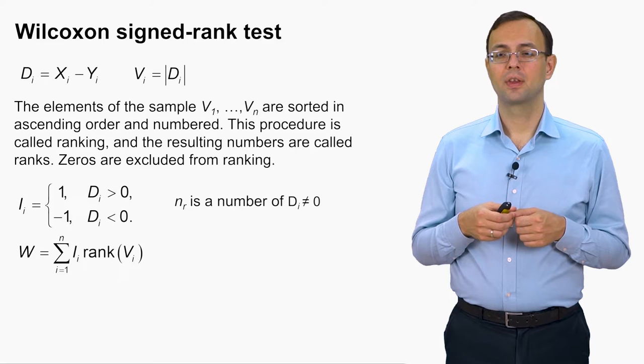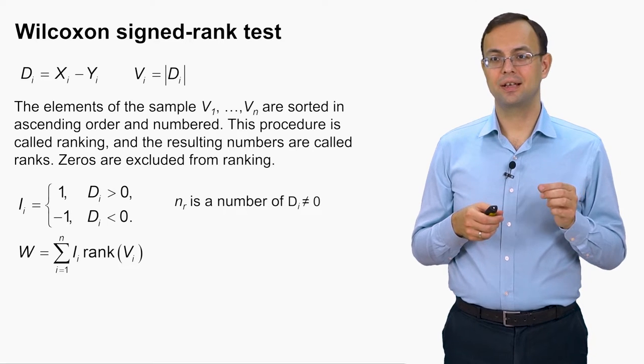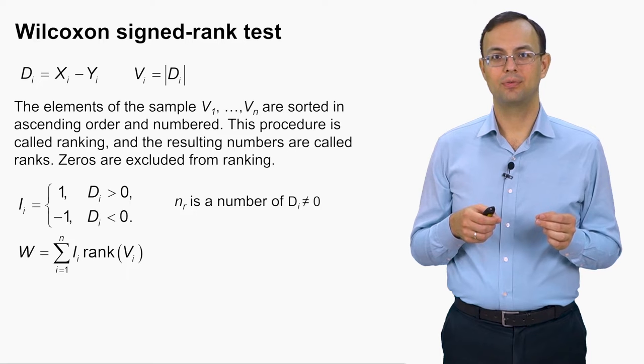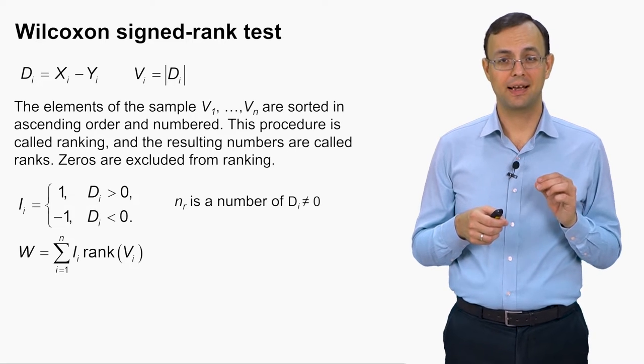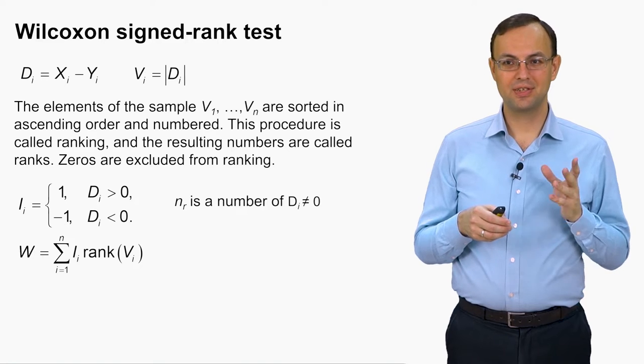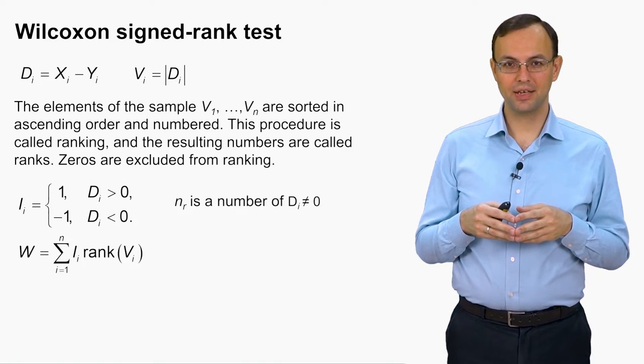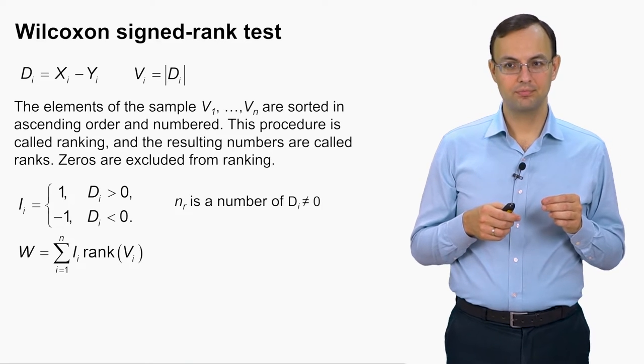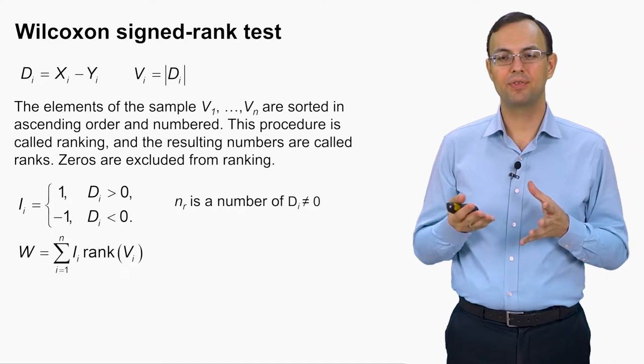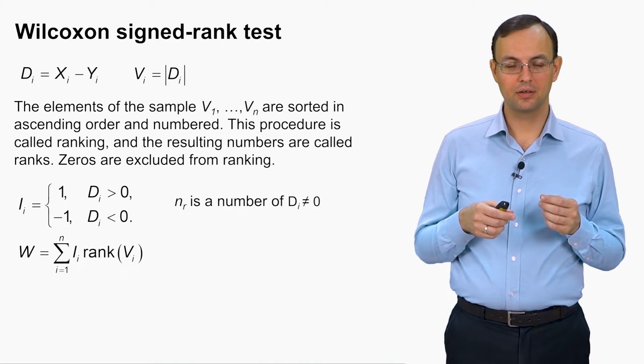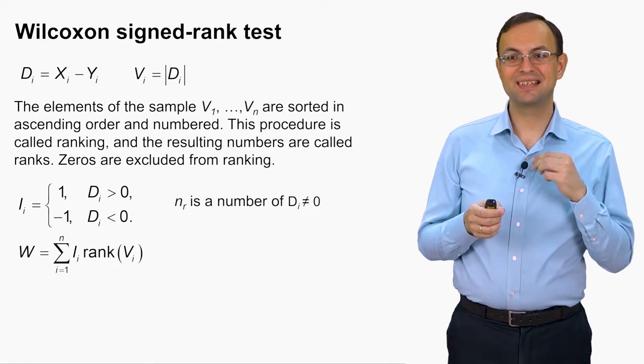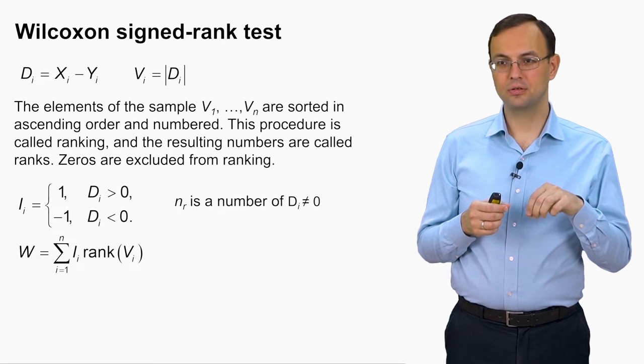Then there is an indicator Ii. This is capital I with its index equal to small i. So Ii is the sign of ith difference. If Ii is equal to 1, then it means that di is positive. If Ii is equal to minus 1, then di is negative. And then we calculate the statistic W. So this W is Ii times rank of vi. The sum of this product. So the rank of vi is multiplied by the sign of the respective di by 1 or minus 1.